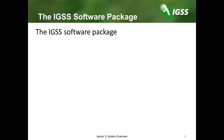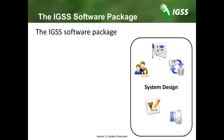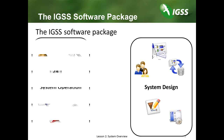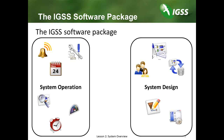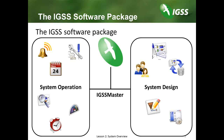The IGSS software package contains a large suite of applications or modules that interact independently or with each other. The modules can be broadly categorized as one set of applications which focus on system design, and one set of applications which focus on system operation, such as monitoring and controlling the plant, creating reports, and supervising the process. The modules are all located in the IGSS install folder and are accessed by the IGSS master, which is a single point of entry for the IGSS program. Furthermore, the modules are grouped in the ribbons of the IGSS master for better access and overview.